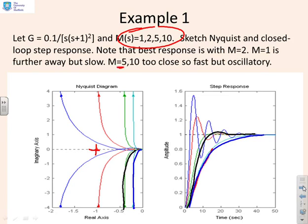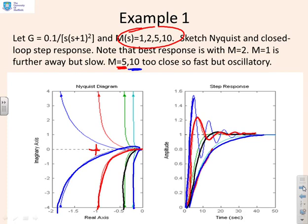When the gain gets up to five, the red plot shows we're beginning to get quite close to the minus one point. As a consequence, we're beginning to get some oscillation — the response is faster due to the higher compensator gain, but there's significant overshoot and oscillation. And finally, if we let the gain go up to ten, we're getting very close to the minus one point and we see significant overshoot and oscillation. This tells us there seems to be a correspondence between the proximity of the Nyquist diagram to the minus one point and the behavior you get.